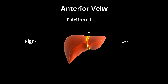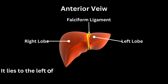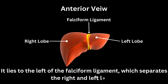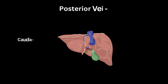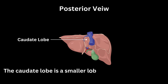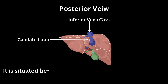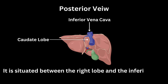The left lobe lies to the left of the falciform ligament, which separates the right and left lobes. The caudate lobe is a smaller lobe located posteriorly on the liver, situated between the right lobe and the inferior vena cava.